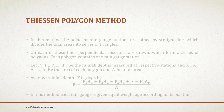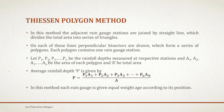Next is the Thiessen Polygon method. In this method, the adjacent rain gauge stations — for example, one in Belgaum area, one in Dharwad, one in Bagalkot — wherever the rain gauge stations are, we join all these stations by straight lines, which divides the total area into a series of triangles, similar to what you may have studied in surveying. We connect all these rain gauge stations and divide them into a series of triangles.